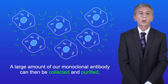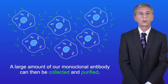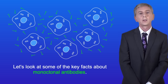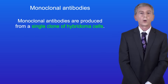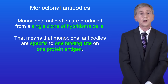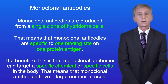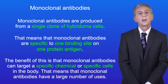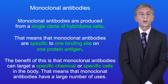A large amount of our monoclonal antibody can then be collected and purified. So let's look at some of the key facts about monoclonal antibodies. As we've seen, monoclonal antibodies are produced from a single clone of hybridoma cells. That means that monoclonal antibodies are specific to one binding site on one protein antigen. The benefit of this is that monoclonal antibodies can target a specific chemical or specific cells in the body, and that means they have a large number of uses, which we look at in the next video.